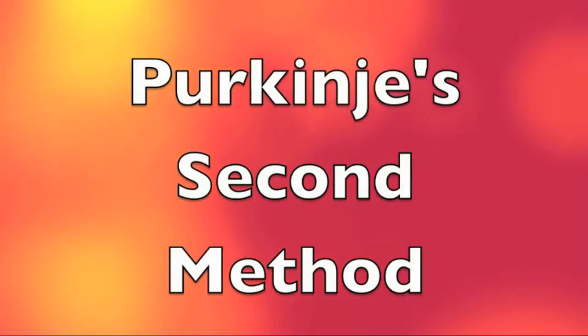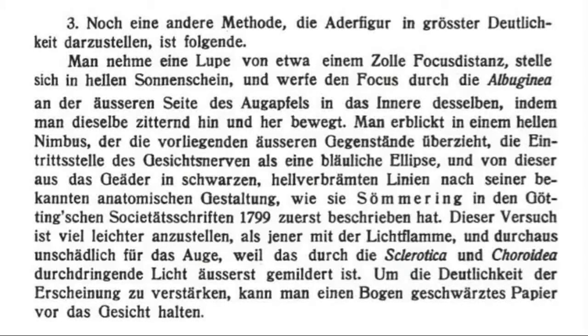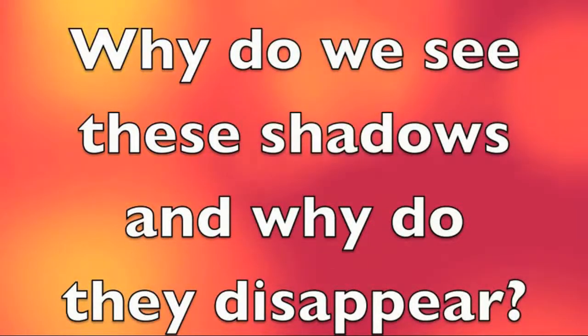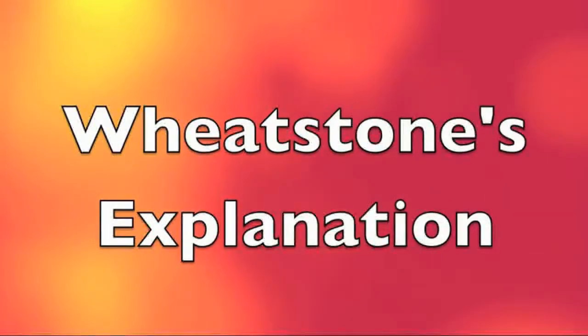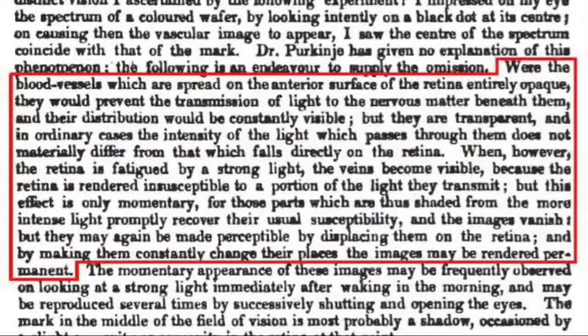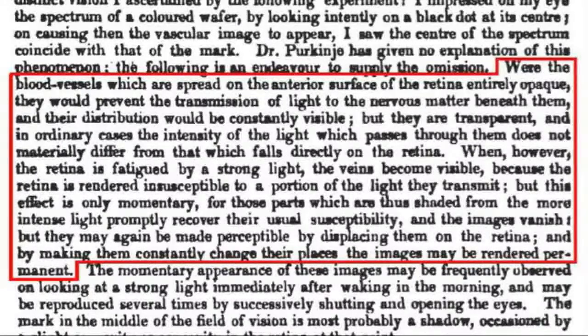Now in 1825, Purkinje published a variation of his original method in which he focused a spot of sunlight into the white of the eye. A safer way of doing this is to hold a white LED against the corner of your closed eyes and move the light in small circles. So why do we see these shadows at all, and why do they fade? Purkinje did not answer these questions. But in 1830, the English scientist Charles Wheatstone, in a review of Purkinje's work, noted that blood vessels are semi-transparent and suggested that normally the photoreceptors on the retina adjust for the decreased light level underneath the vessels. But when the shadows move, the photoreceptors require a little time to readjust.